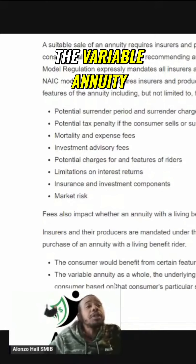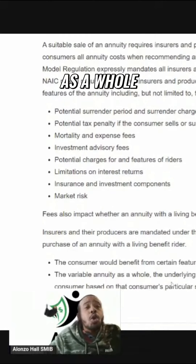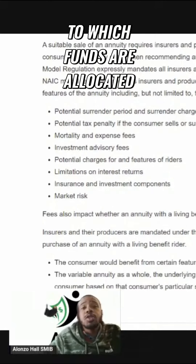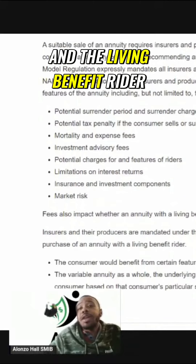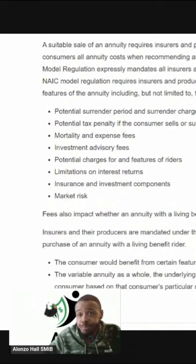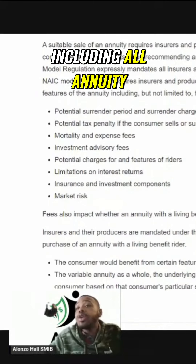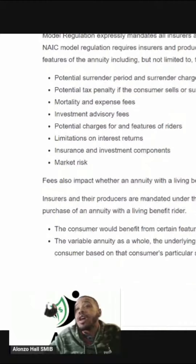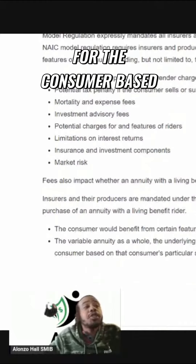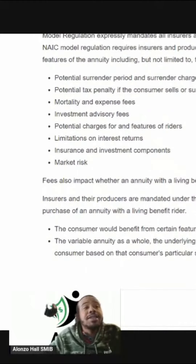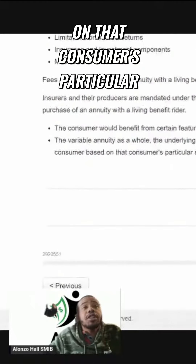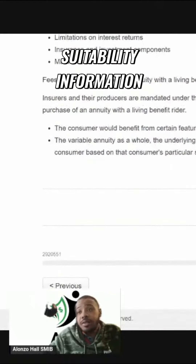The variable annuity as a whole, the underlying sub-accounts to which funds are allocated, and the living benefit rider, including all annuity and rider fees, are suitable for the consumer based on that consumer's particular suitability information.